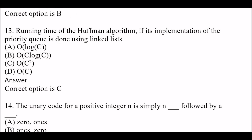Next question: The running time of the Huffman algorithm, if its implementation of the priority queue is done using a linked list — Option A: O(log C). Option B: O(C log C). Option C: O(C²). Option D: O(C). The right answer is Option C, O(C²).